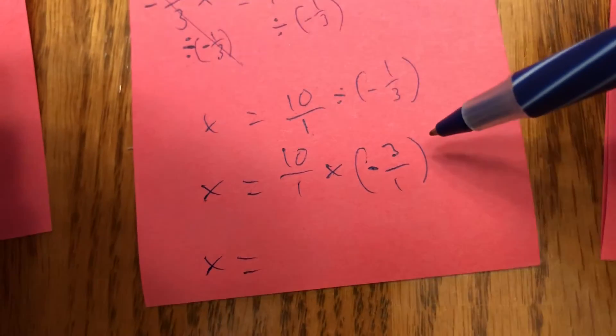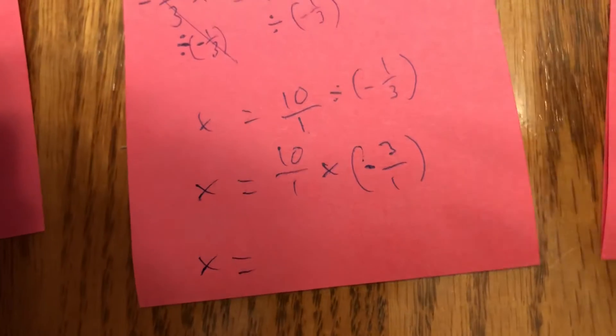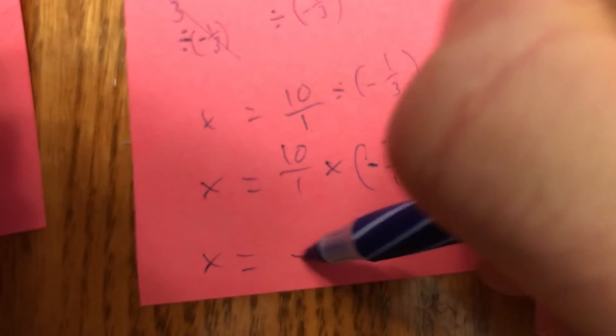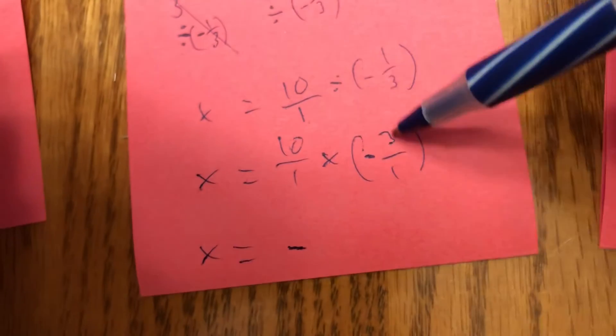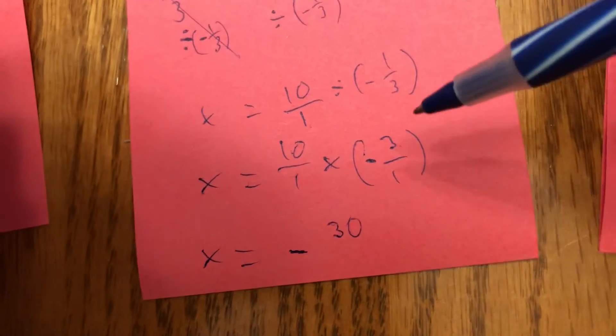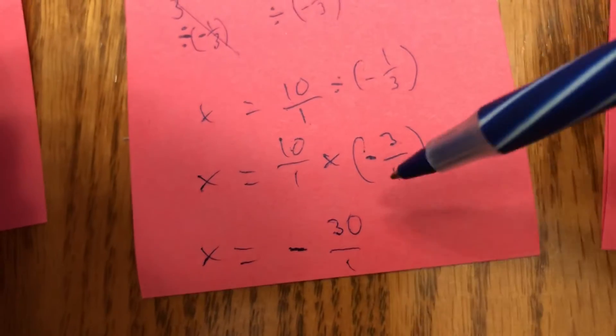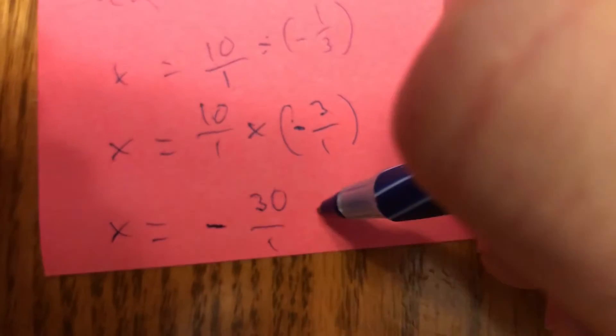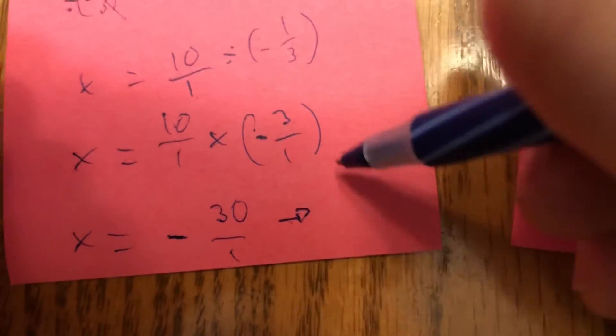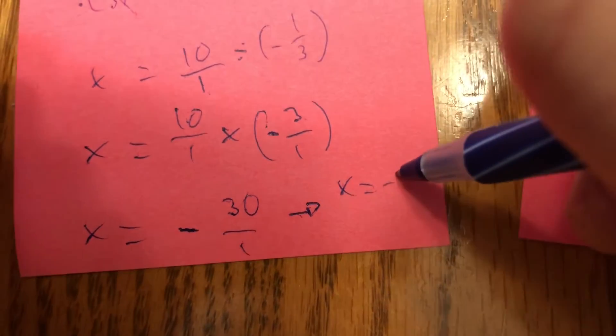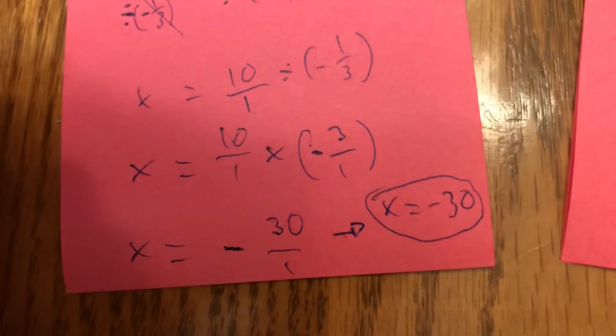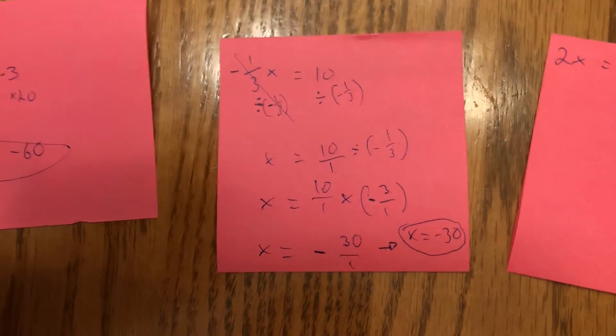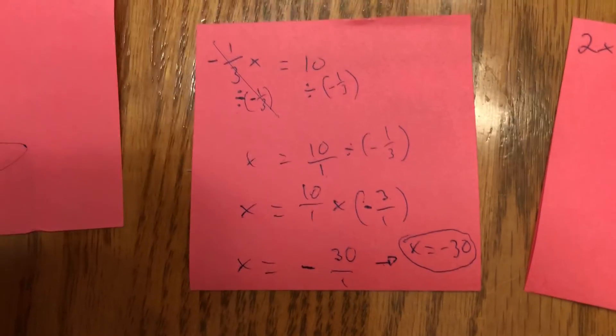I've got an odd number of negatives. So, I know my answer is going to be negative. 10 times 3 is 30. 1 times 1 is 1. And now, I'm kind of out of space here. So, you'll have to forgive me. This should be below, but I don't want to write on the table. So, this is going to be x is equal to negative 30. Here's my answer. A few more steps than the other questions. You betcha. There definitely are.